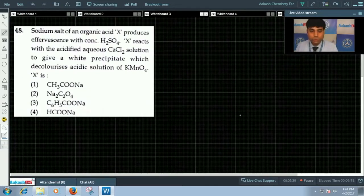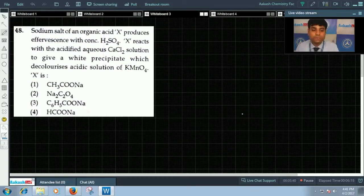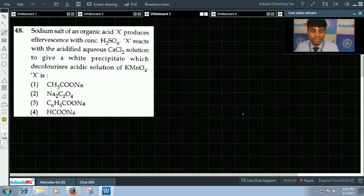Question number 48 says: sodium salt of an organic acid X produces effervescence with concentrated H2SO4. X reacts with acidified aqueous CaCl2 solution to give a white precipitate which decolorizes acidic solution of KMnO4. X is. The options are sodium acetate, sodium oxalate, sodium benzoate, and sodium formate.